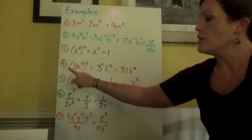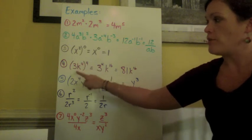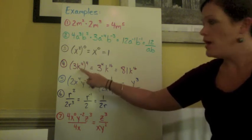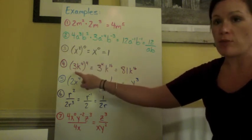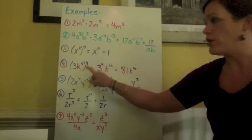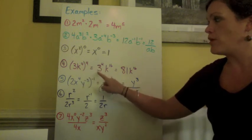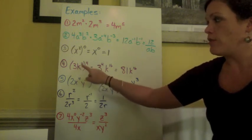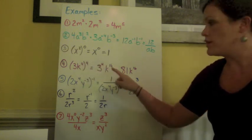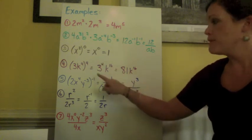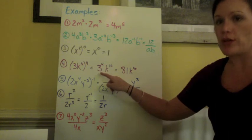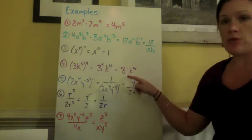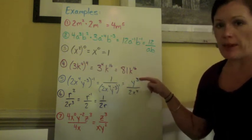Number 4. We have 3k to the fourth power. So we have a product and a power of 4. So this is power of a product. Each piece needs to go to the 4th power. 3 to the 4th power and k to the 4th power times the 4th power gives us 16. We get 81k to the 16th power as our answer.